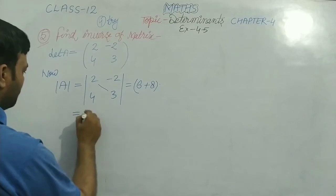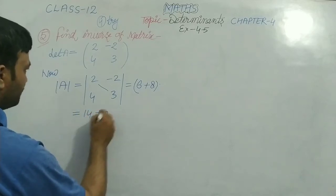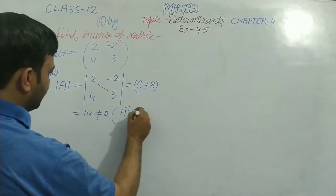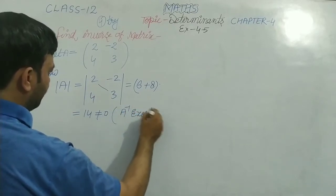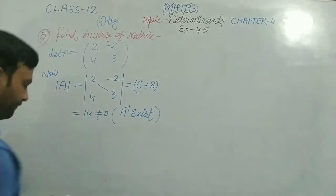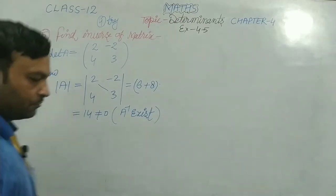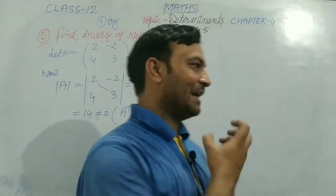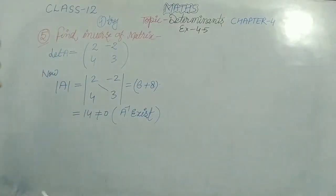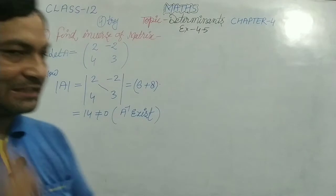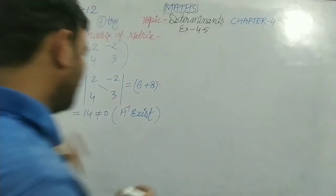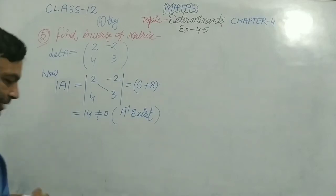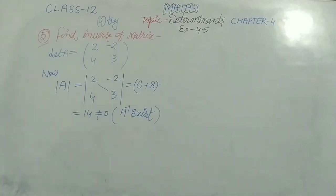The determinant equals 14, which does not equal zero, so A inverse exists. If the determinant were zero, we would say that A inverse does not exist. Here, A inverse exists because the determinant is not equal to zero.